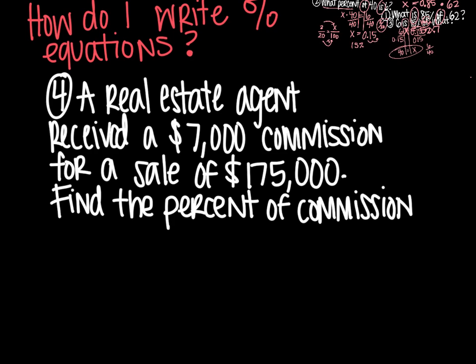Number 4. A real estate agent received a $7,000 commission for a sale of $175,000. Find the percent of commission. So with word problems, it gets a little bit trickier, but you do want to find your total. In this case, the total is what she received, which was $7,000. So that's my total. What made up that total?